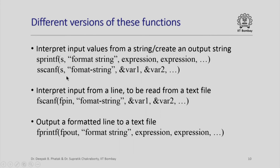Exactly the same concept can be used for reading from or writing to files. To interpret input from a text file, I can use fscanf. Notice that fscanf has exactly the same components as scanf — a format string and a list of variables — but the first parameter is fpin, which is a file pointer associated with an input text file. In exactly the same fashion, I can output a formatted line to a text file by giving fpout as the first parameter of fprintf. The rest of the specifications for fprintf are exactly like printf.